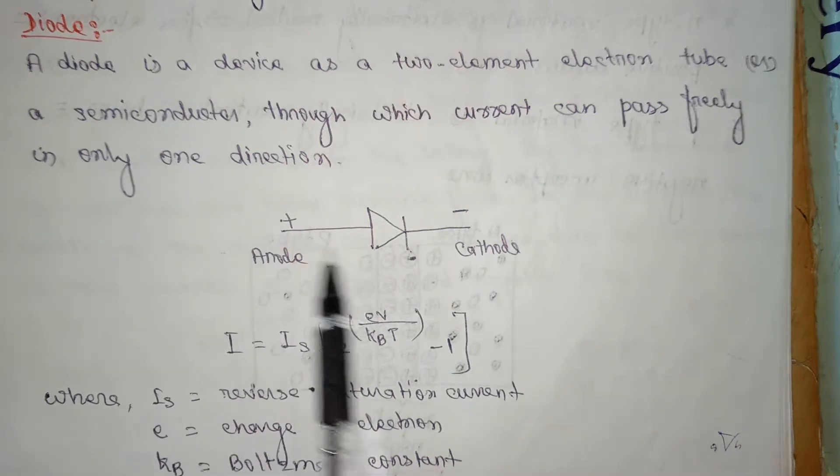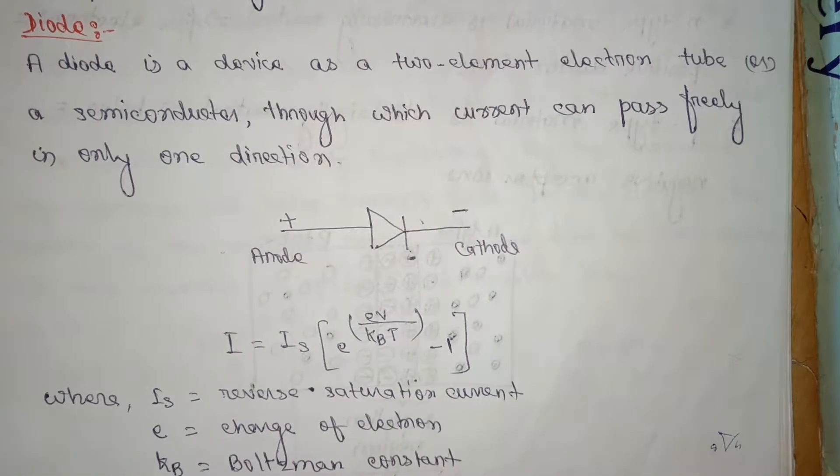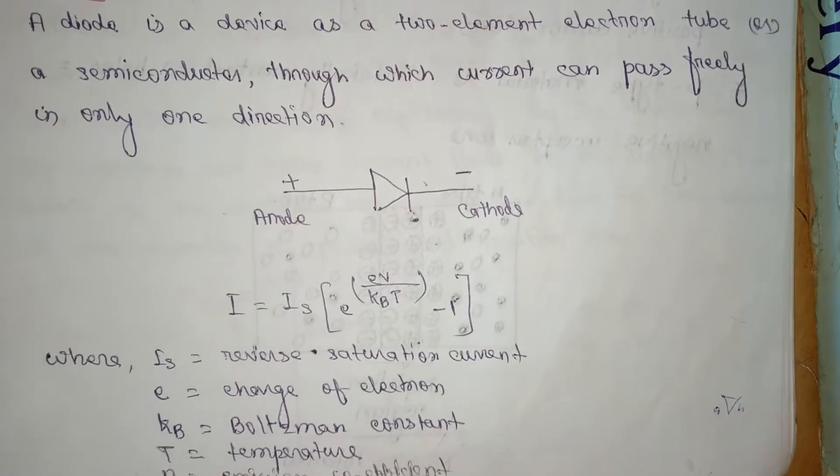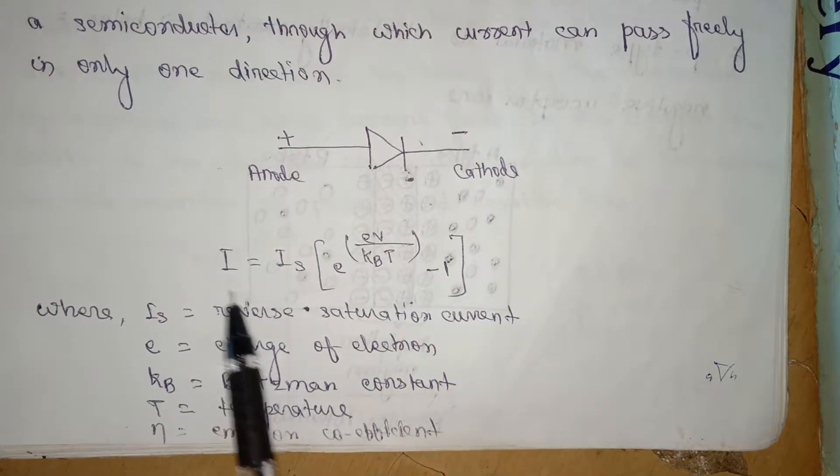This is the direction of current. The equation for the diode is I is equal to Is exponential of eV by kVT minus 1.